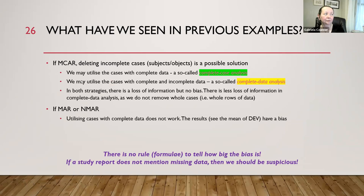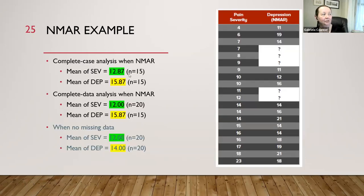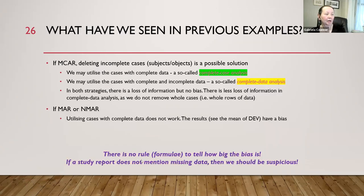When we have MAR or NMAR, complete data analysis is preferred to complete case analysis because it utilizes the data better. However, there is no formula to quantify how big the bias is — it always depends on the study. Typically, statisticians simulate or use bootstrapping to estimate the bias, because there is no mathematical expression for it. If you read a data science report and they say nothing about missing data, that's always suspicious.